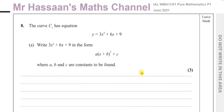Welcome back to Mr. Hassan's Math Channel. This question is number 8 from the International A-Level Pure Mathematics P1 June 2021 exam. The first part is about completing the square. It says the curve C1 has equation y equals 3x squared plus 6x plus 9. Write 3x squared plus 6x plus 9 in the form a times (x plus b) squared plus c, where a, b, and c are constants to be found.